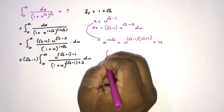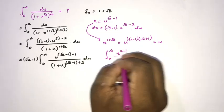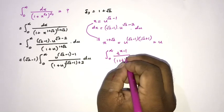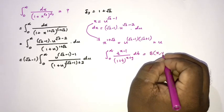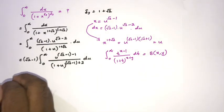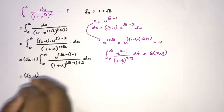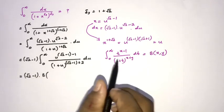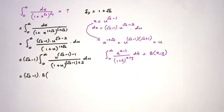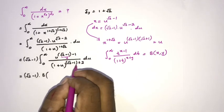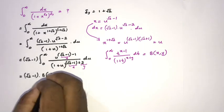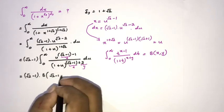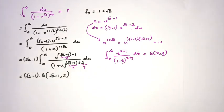We now use the definition of the beta function: the integral from 0 to infinity of t to the x minus 1 over 1 plus t to the x plus y, dt, equals beta(x, y). Matching our integral to this definition, we can write our integral equals square root of 2 minus 1 times beta(square root of 2 minus 1, 2).